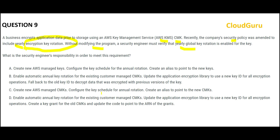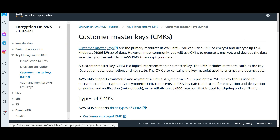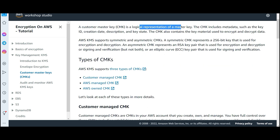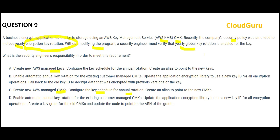In terms of CMK, there is always a feature to configure the key schedule for annual rotation — this is available for AWS-managed CMKs. Options A and C are confusing because they look identical; the only difference is A talks about AWS-managed keys and C talks about AWS-managed CMKs. CMK means customer managed keys — these are the primary resources in KMS. A CMK contains metadata such as key ID, creation date, description, key state, and the key material used to encrypt and decrypt data.